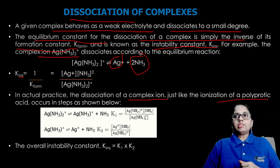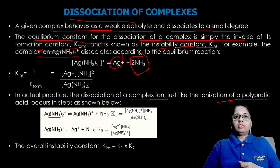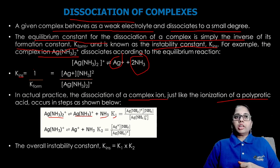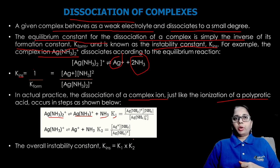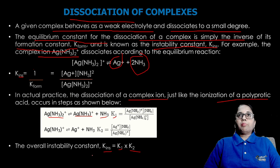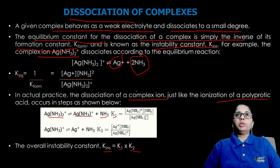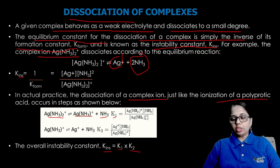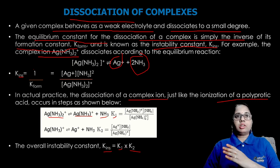In practice, the dissociation of a complex ion — like the ionization of a polyprotic acid — occurs in steps. For example, Ag(NH₃)₂⁺ dissociates first to Ag(NH₃)⁺ + NH₃ (giving K₁), then to Ag⁺ + NH₃ (giving K₂). The overall instability constant K_ins = K₁ × K₂. This concept of formation and instability constants is important when complexes act as weak electrolytes.